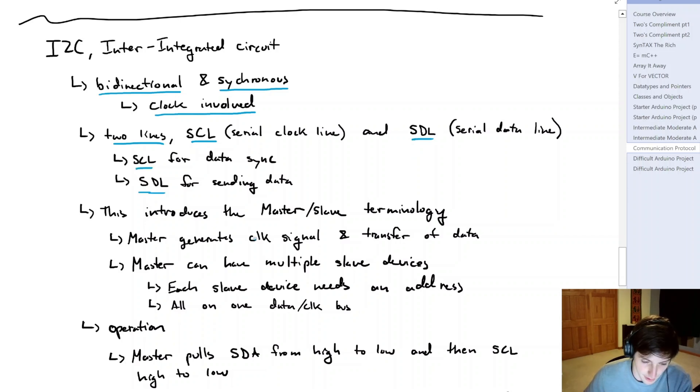Now another thing that I2C does is it introduces us to this master-slave terminology. So we will have a master device, and this is going to generate the clock signal and the transfer of data. And we can have multiple slave devices. Each of those slave devices is going to need a unique address. And since all of the slave devices have unique addresses, it actually allows us to put all of these devices on one bus.